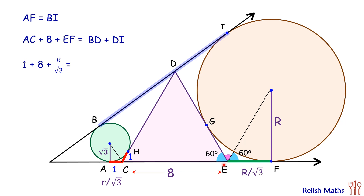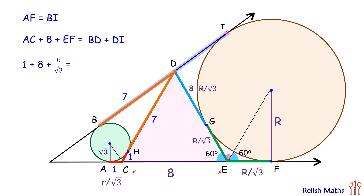This full triangle is equilateral with all sides 8 centimeters, and thus the length DH equals 8 minus 1, or 7 centimeters. From external point D, two tangents are drawn on the green circle, so they are equal in length — length DH equals DB, so DB is 7 centimeters. From point E, two tangents EF and EG are drawn on the brown circle, so EG also equals r over √3.